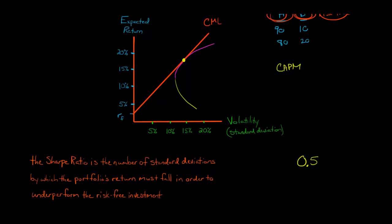There are a lot of different uses of the Sharpe Ratio, but if you're just going to remember one thing, remember that it's a risk-adjusted measure. When we're evaluating a portfolio, we're asking: how much reward are we getting per unit of risk? If we've got portfolio A, portfolio B, and portfolio C, we can rank them based on their Sharpe Ratio. The one with the highest Sharpe Ratio is giving you the biggest expected reward per unit of risk or volatility.